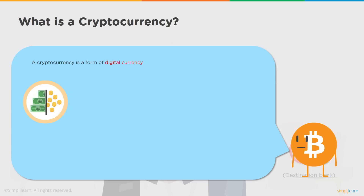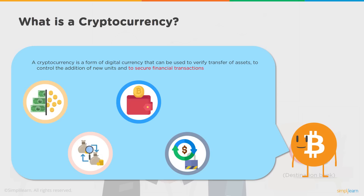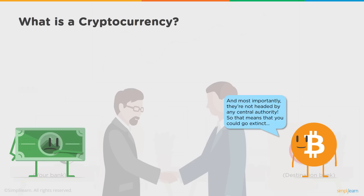What is a cryptocurrency? Cryptocurrency is a form of digital currency that can be used to verify transfer of assets from one party to another. It controls the addition of new units, there is limited supply, and it provides secure financial transactions. Anonymity of the sender and receiver is maintained, and the sanity of the transaction is maintained — all done using cryptography.